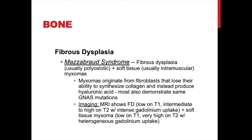Mazabraud syndrome involves fibrous dysplasia — usually polyostotic — with soft tissue intramuscular myxomas typically located directly adjacent to the affected bone. The myxomas originate from fibroblasts that lose their ability to synthesize collagen and instead produce hyaluronic acid, and they demonstrate the same GN-alpha subunit protein mutation. On MRI, fibrous dysplasia shows low signal on T1, intermediate to high on T2 with intense gadolinium uptake, while the adjacent myxoma is homogeneous low signal on T1, very bright on T2, with heterogeneous gadolinium uptake.